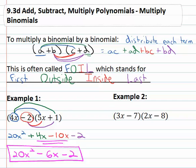Let's try another example. Here we have 3X minus 7 times 2X minus 8, and again we're just going to grab the first term in that binomial and distribute it through the second binomial. 3X times 2X is 6X squared, 3X times negative 8 is negative 24X.